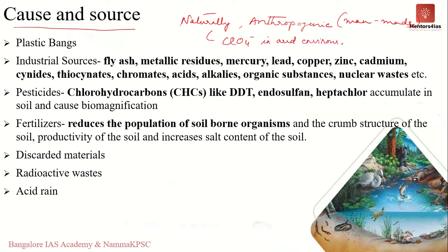Soil pollution can also take place due to human activities, which we refer to as anthropogenic soil pollution. Anthropogenic or man-made contaminants are the main cause of soil pollution and consist of a large variety of contaminants, both organic and inorganic, usually due to improper disposal of waste from agricultural activities, excessive industrial activities, and inefficient disposal of waste.